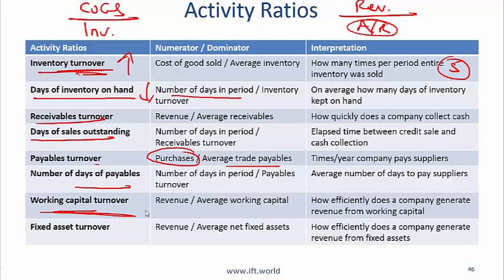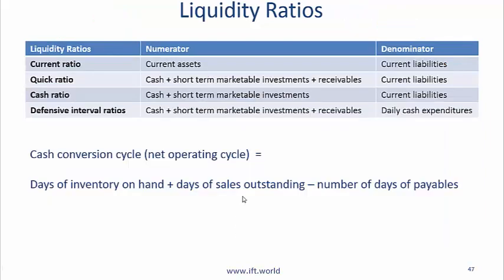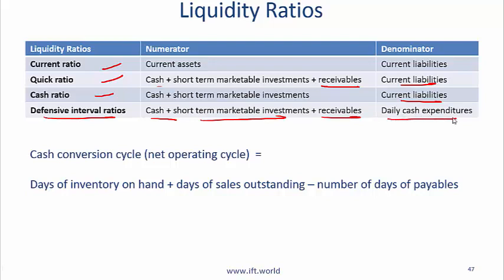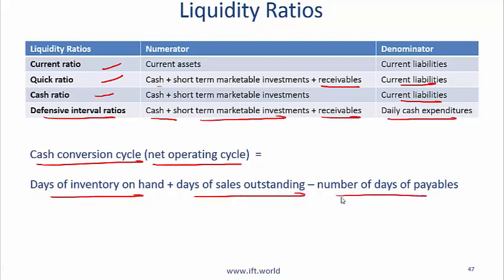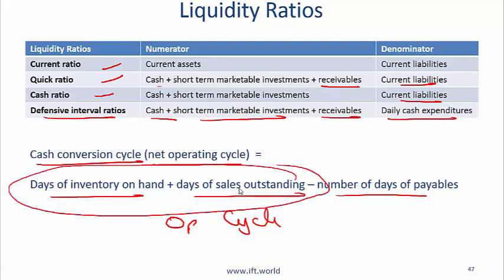Working capital turnover is revenue divided by average working capital. Fixed asset turnover is revenue divided by average fixed assets. For liquidity ratios: the current ratio is current assets over current liabilities. The quick ratio is cash plus short-term marketable securities plus receivables over current liabilities. The defensive interval ratio uses the same numerator divided by daily cash expenditures. The cash conversion cycle — or net operating cycle — measures how long between spending and receiving cash: days of inventory on hand plus days of sales outstanding minus number of days of payables. The operating cycle is days of inventory on hand plus days of sales outstanding.